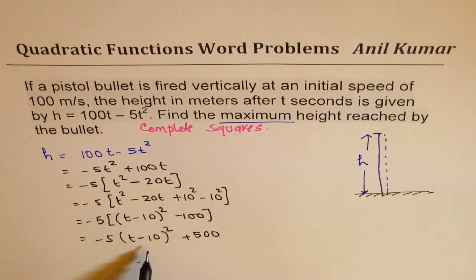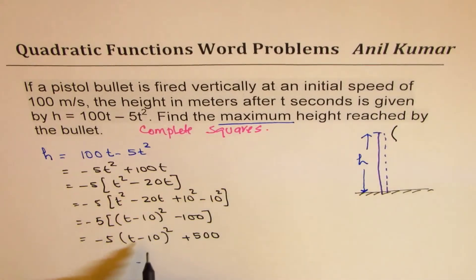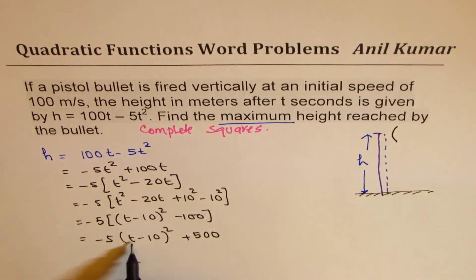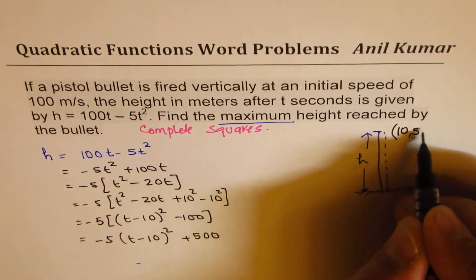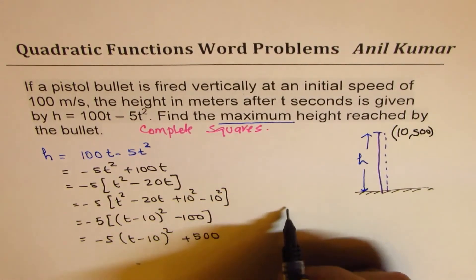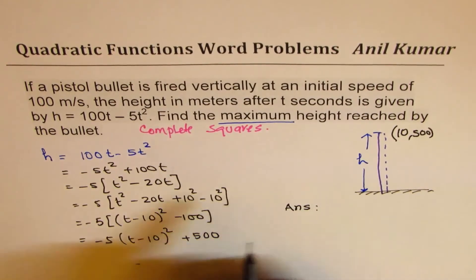Minus 5 times t minus 10 whole squared. And that becomes plus 500. So we get the vertex. And this vertex happens to be at t equals to 10. And the maximum height is 500. Do you see that? Now you can write down your answer.